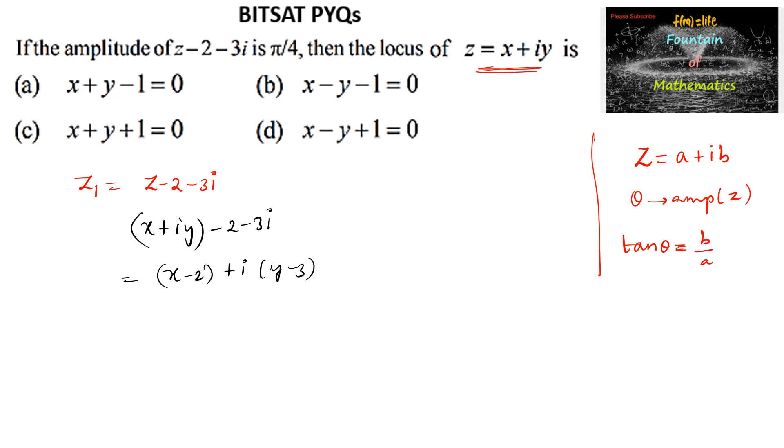The amplitude of z₁ is π/4, so tan(π/4) = b/a = (y - 3)/(x - 2). Since tan(π/4) = 1, we have 1 = (y - 3)/(x - 2).